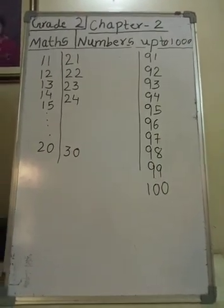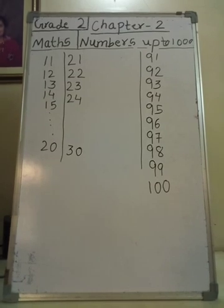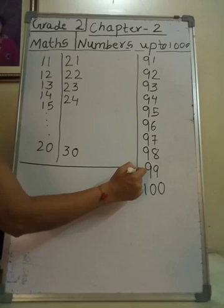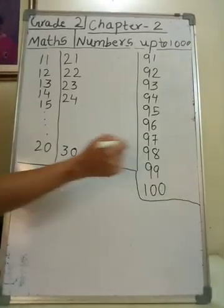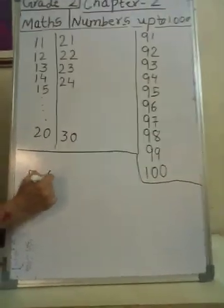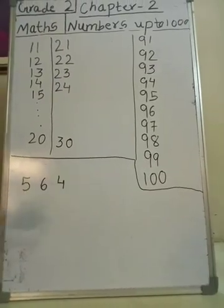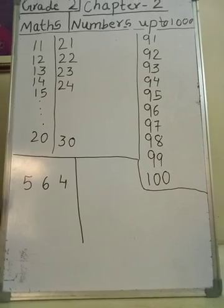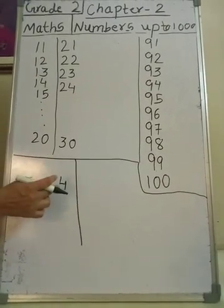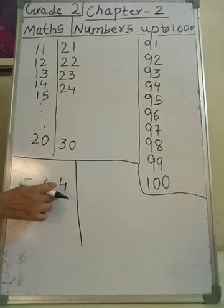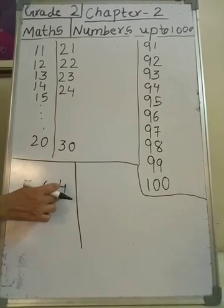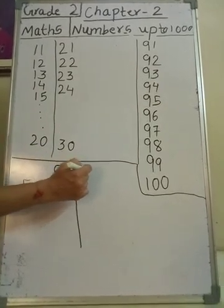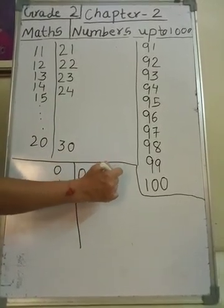So today we are going to learn about three-digit numbers with respect to their place. Suppose I am writing one number here: 5, 6, 4. Now we have to learn about its place. We will start from the right side. From the right side, the first number's place is 1's — that is O. O is for 1's.